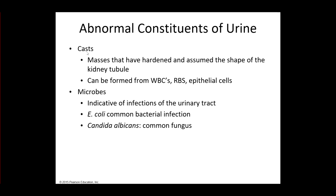Sometimes we can have masses that have hardened and assume the shape of the kidney tubes. We call them casts. They can be white blood cells, red blood cells, epithelial cells, or even other minerals and things like that that take on the shape of the tube. And then microbes would also be abnormal. Normally urine is basically sterile. It should not have any microbes in it. So it would be an indication that somebody does have a UTI, a urinary tract infection.